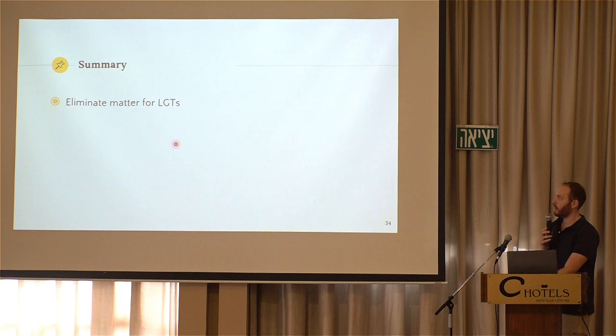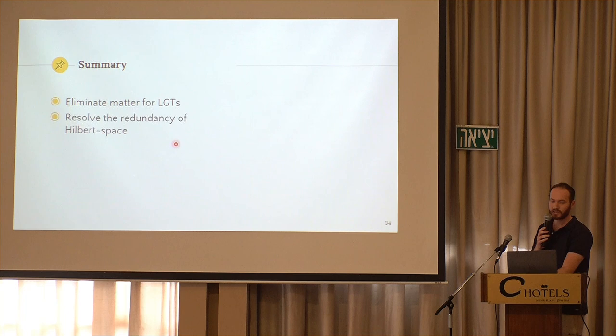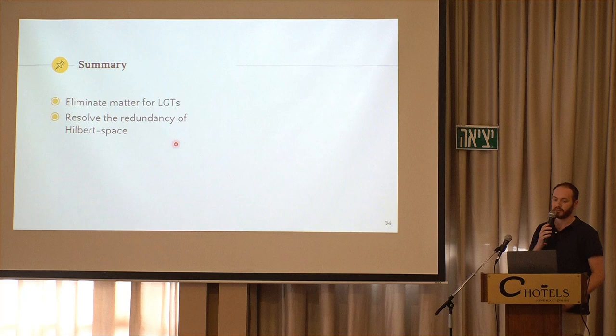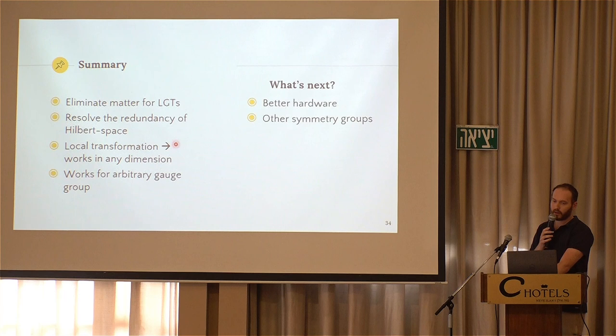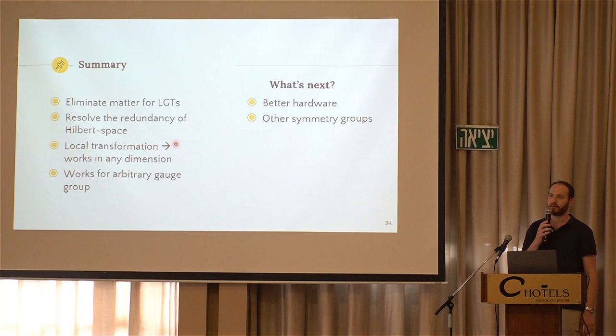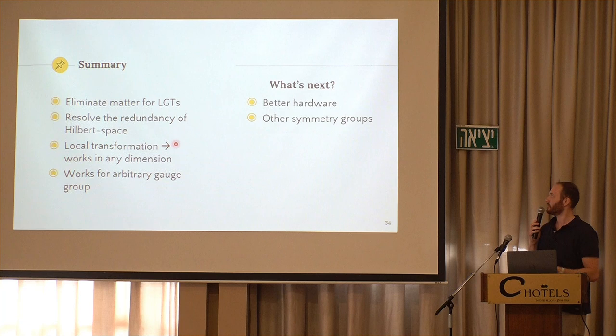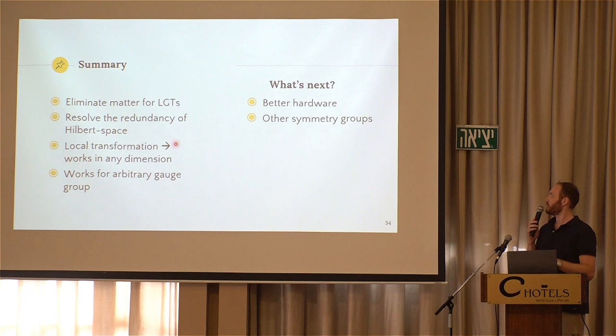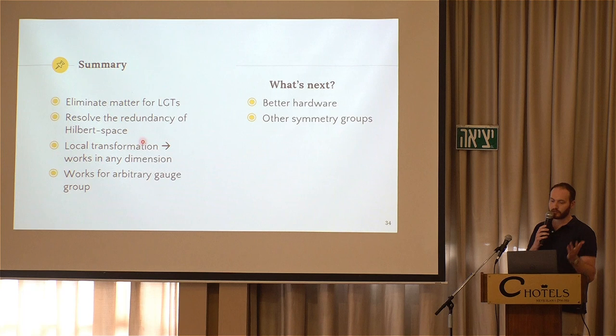And that's about it. So in summary, we eliminate the fermionic matter from lattice gauge theories and use it as a method for quantum simulation. This resolves the redundancy of the Hilbert space which is an inherent problem of lattice gauge theories. And the transformation is local so it works in any dimension and it works for almost any gauge group that you can think about. And what's next? So we hope that someone will implement this method on better hardware and will answer some unanswered questions instead of just demonstrating it someday. And we are thinking about calculating the method and implementing it for other symmetry groups than Z2, just to benchmark it. And that's it. Thank you for your attention.